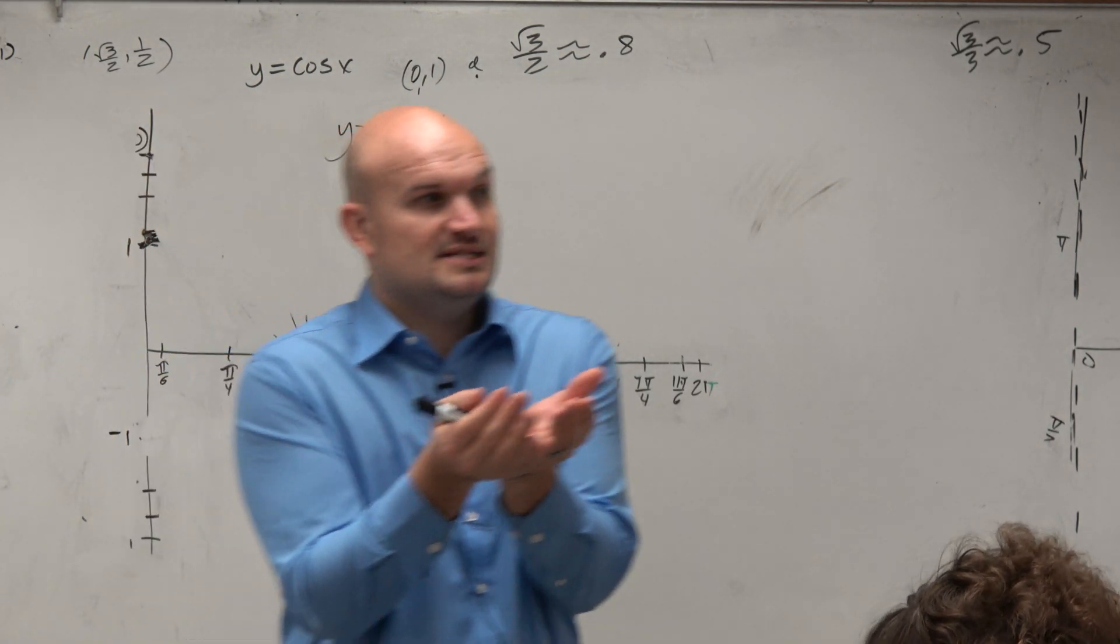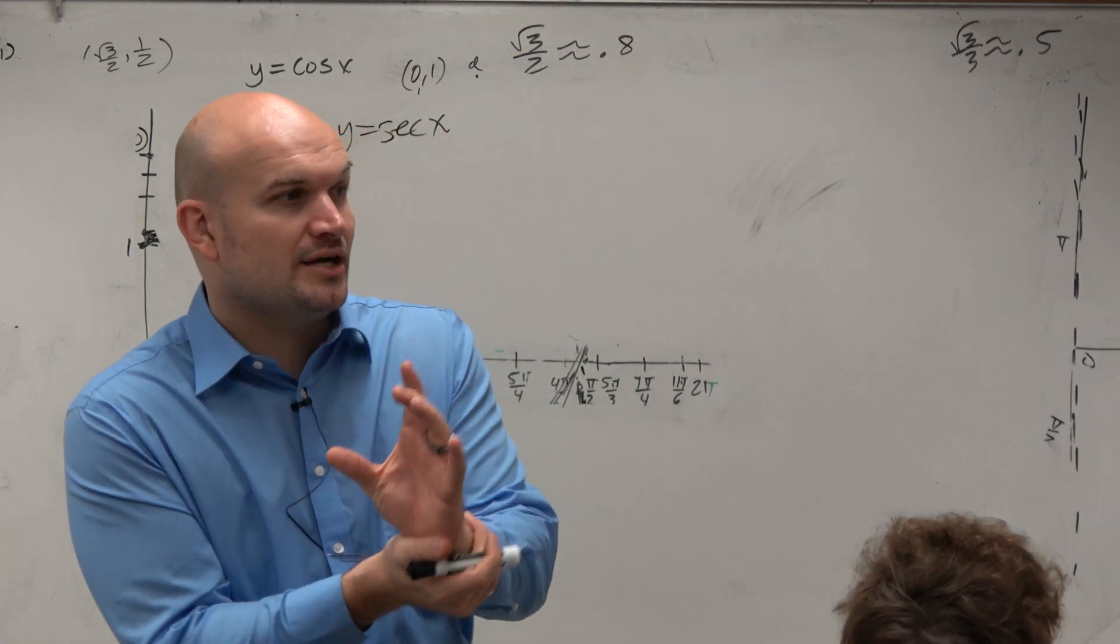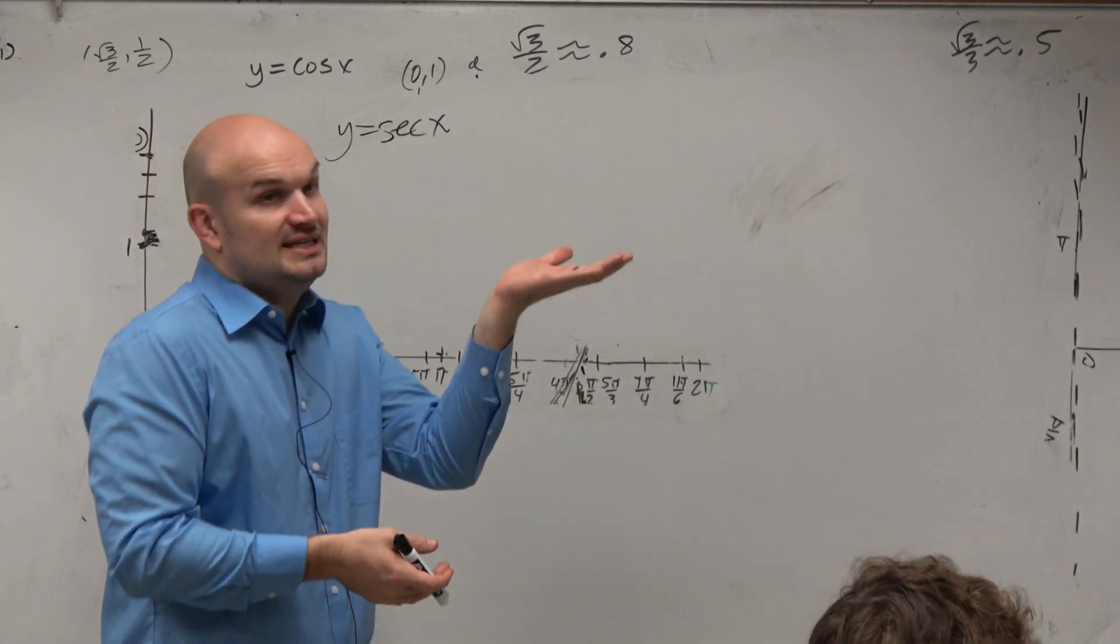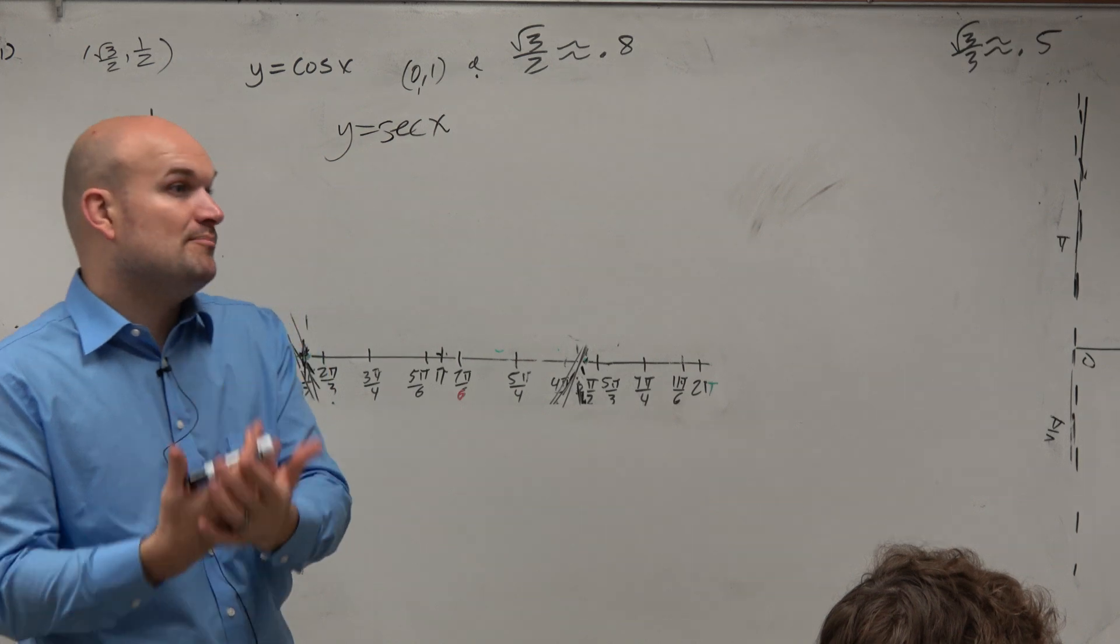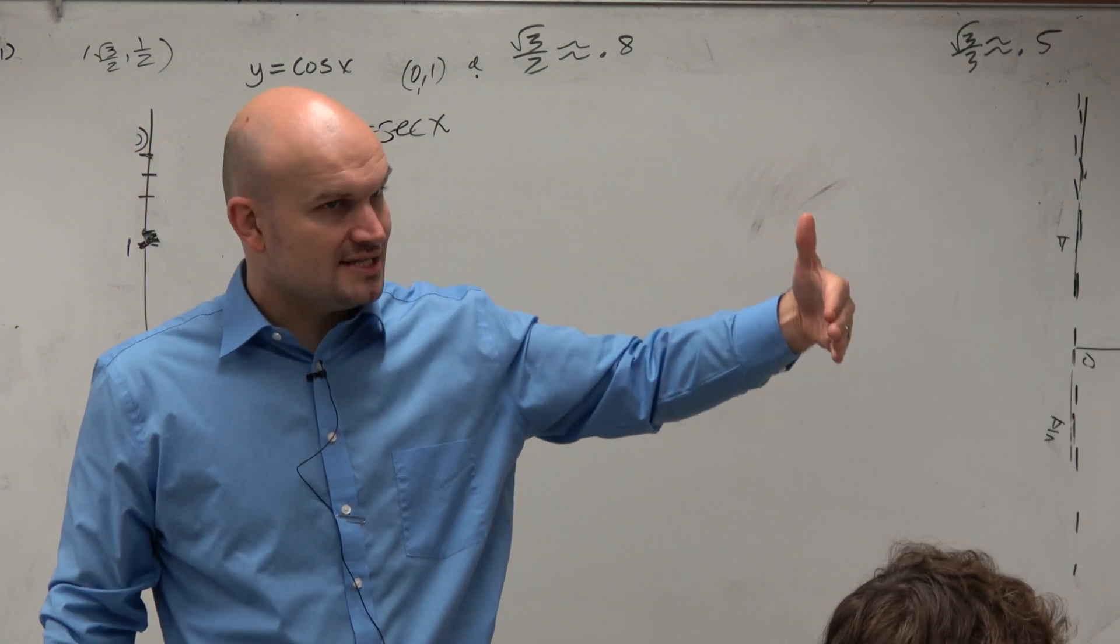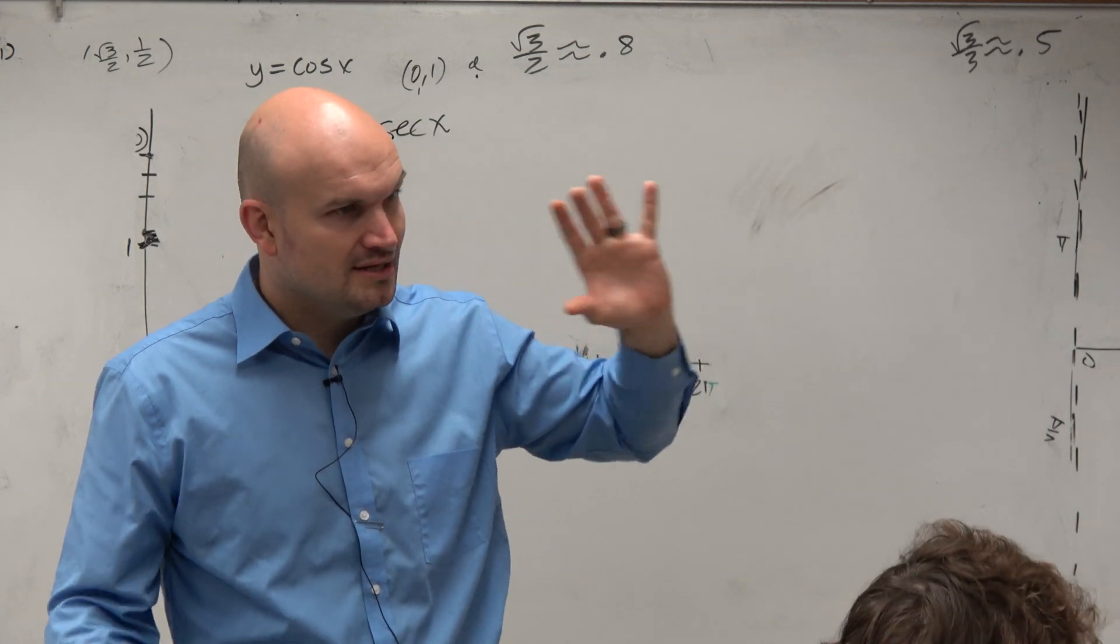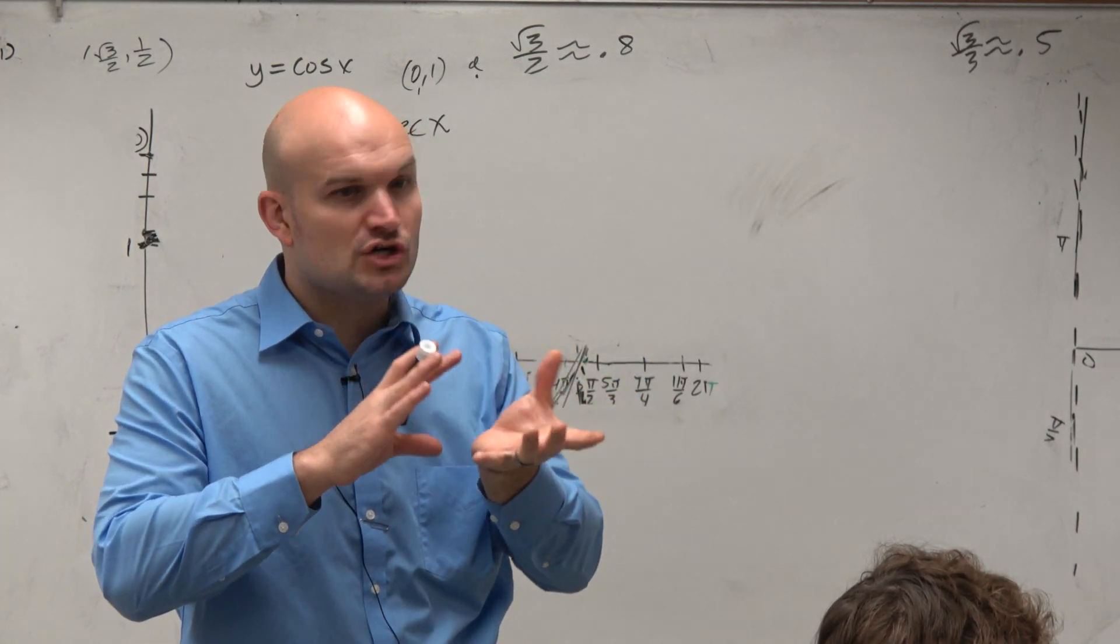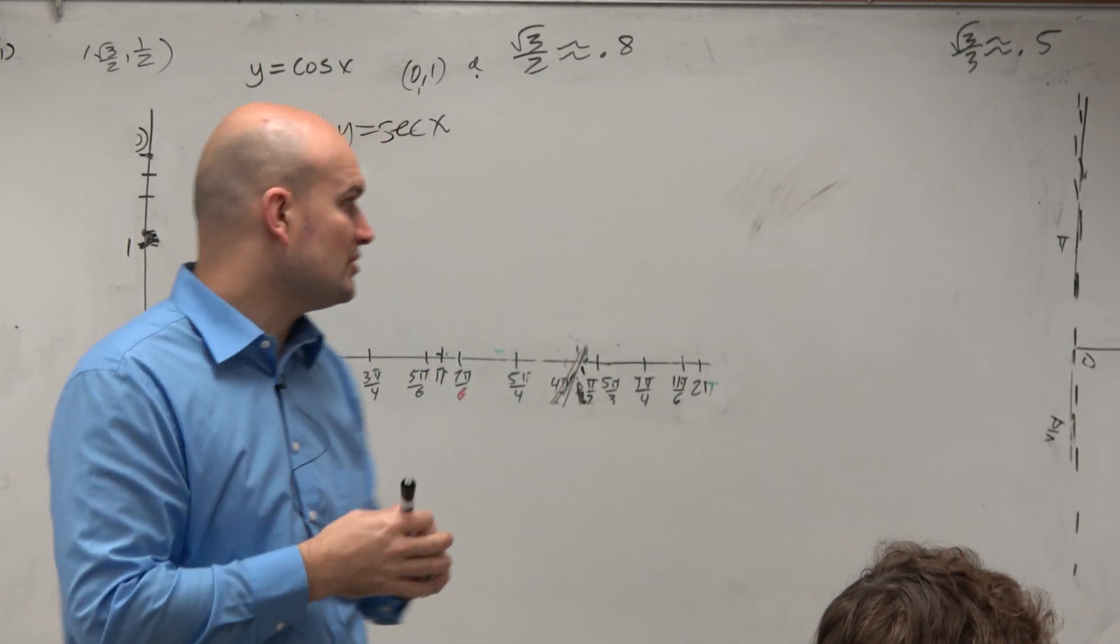So we know that the cosine of an angle in a triangle is adjacent over hypotenuse. The secant of that angle is hypotenuse over adjacent. For a given point on the unit circle, the cosine is x. For a given point on the circle, the secant is 1 over x. So they're just a flipped version of each other. That word flipped is going to become very important for us.